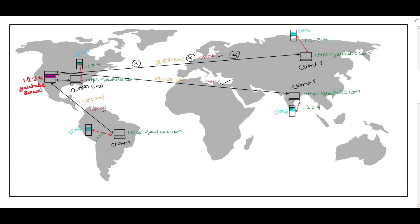This is the actual problem: when we deploy the server in one particular geographic location, that will be beneficial only for that particular area. For other geographic locations like Russia, China, India, Brazil, Poland, it is not beneficial. If the geographic location is far from the deployed server, latency increases and the client will not be happy — the video will be loading or buffering, taking a lot of time to serve from the original server to the client. To resolve this issue we have to use CDN — Content Delivery Network.